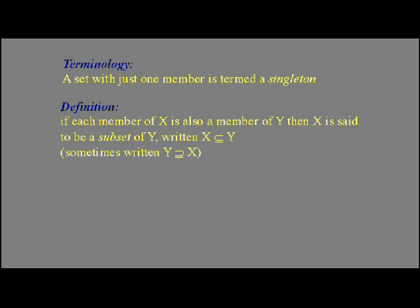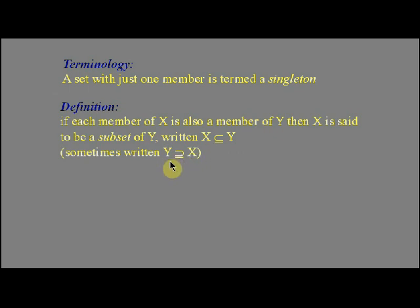If we have two sets x and y, and if each member of x is also a member of y, then x is said to be a subset of y. We write that using a U-type symbol on its side with a line underneath it. Sometimes we'll write that sign the other way around — in that case, y is what we call a superset of x. If x is a subset of y, then y is a superset of x.